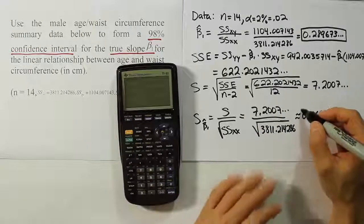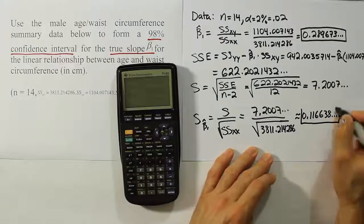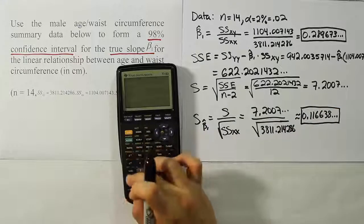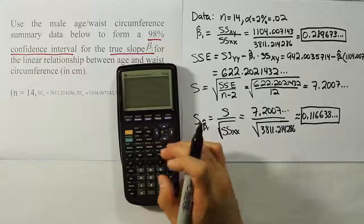Now, that's an important value for us, so I'm going to go ahead and highlight it here, and I'm going to store it in my calculator under S, alpha S, so I have that for later use.